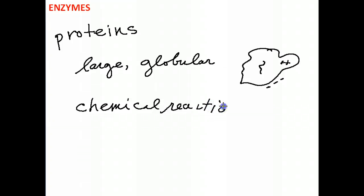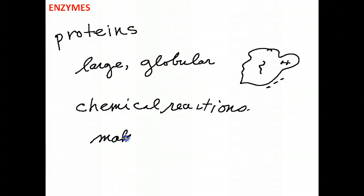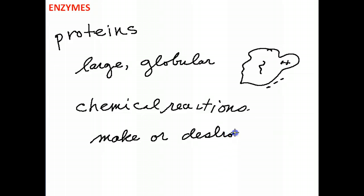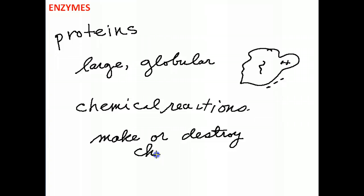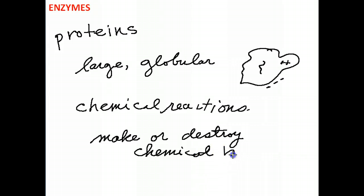Now what are these chemical reactions going to do? They're basically going to make or destroy — you can also say break — chemical bonds. Usually these chemical bonds are going to be covalent bonds. This serves as the basis of metabolism.